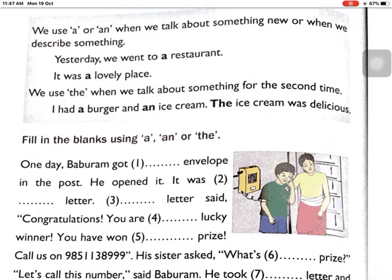When describing the same thing a second time, we use THE. For example: 'Yesterday we went to a restaurant. It was a lovely place. I had a burger and an ice cream. The ice cream was delicious.' Notice: first time it's 'an ice cream,' and the next time it becomes 'the ice cream.'